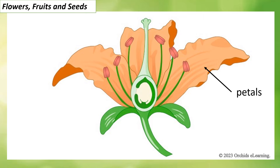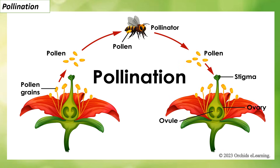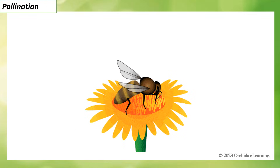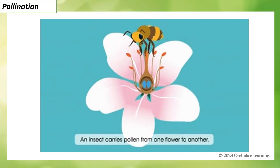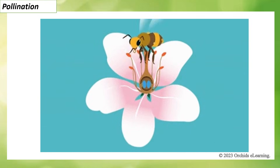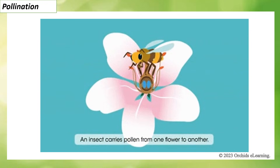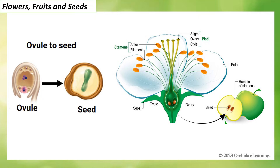Petals are colorful structures that surround the inner part of the flower. Pollination: for a flower to develop into a fruit and form seeds, pollen grains must be transferred from the anthers to the stigma — this transfer is called pollination. Many flowers are brightly colored and have a sweet smell to attract insects such as bees. When an insect sits on the flower, the pollen grains stick to its body and may be rubbed off when it sits on another flower, helping in pollination. After pollination, the ovules change into seeds, and as the seeds form, the ovary develops into a fruit.